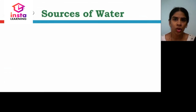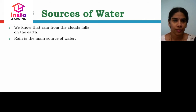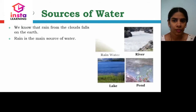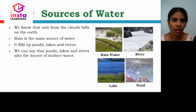What are the sources of water? We know that rain from the clouds falls on the earth. Rain is the main source of water. It fills up ponds, lakes and rivers. We can say that ponds, lakes and rivers are also the sources of surface water.